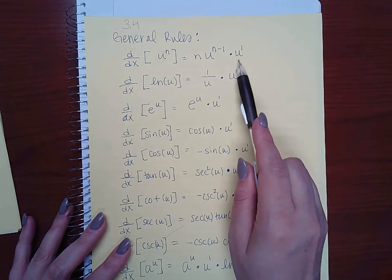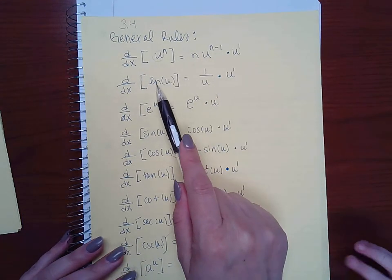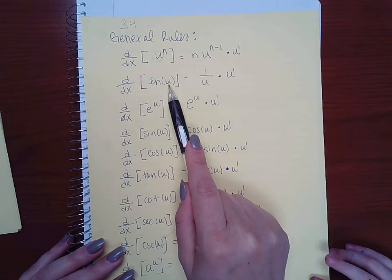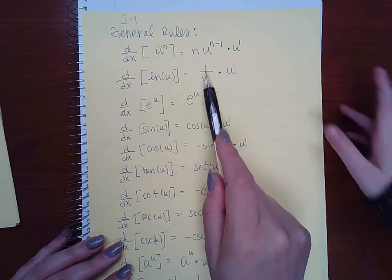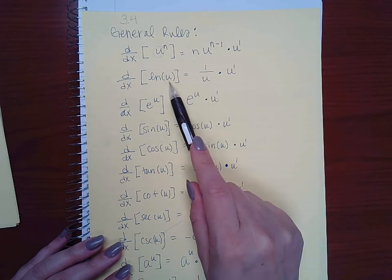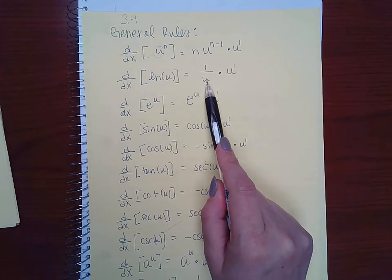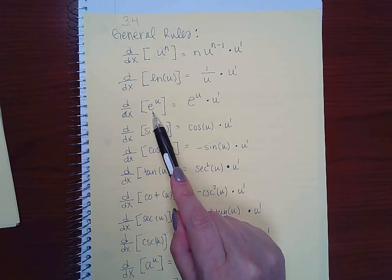If you're taking the natural log of anything other than just x, when you take the derivative it'll be 1 over that original argument, and then times the derivative of that argument. If you're taking the derivative of an exponential function and the exponent is anything other than x, then you still get e to that same exponent, but you have to multiply by the derivative of that exponent.